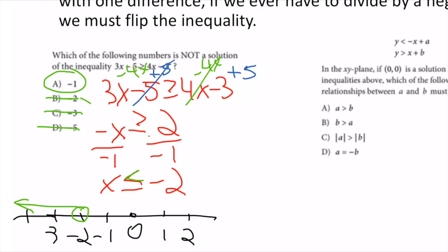-1 is not a solution; the rest are. This was a bit tricky because it asked for what was not a solution. The inequality is facing left, so everything from -2 to the left works, and we're left with just A — which is -1 — does not work.